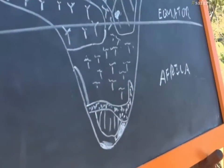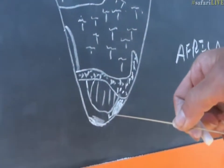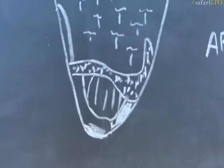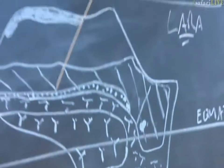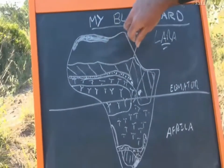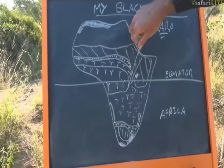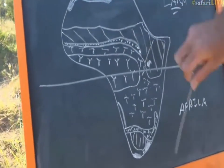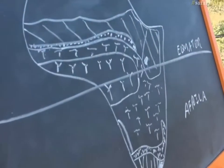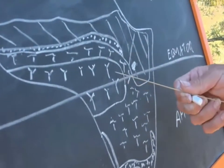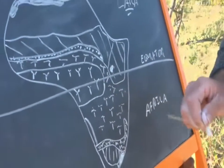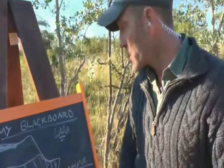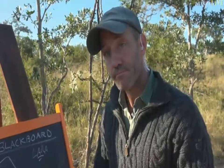And then over here you find tropical forest, and this area here is the forest of the Congo Basin. On the equator, unsurprisingly, you find a huge amount more rain, and in the Congo Basin that's where you find the very thick rainforests. So that, Lara, is what the vegetation of Africa looks like.